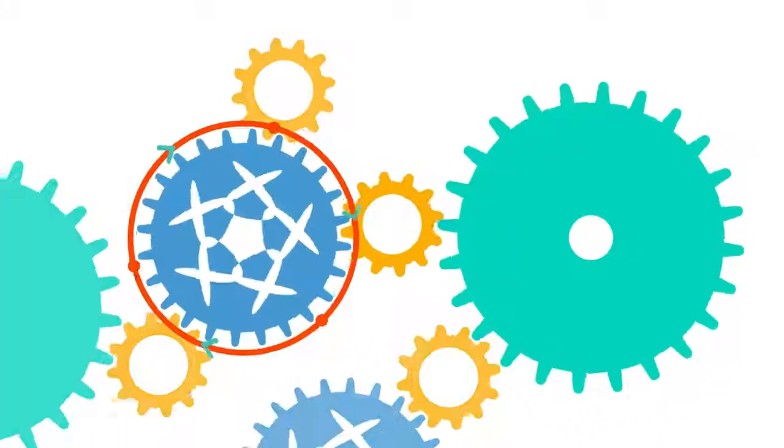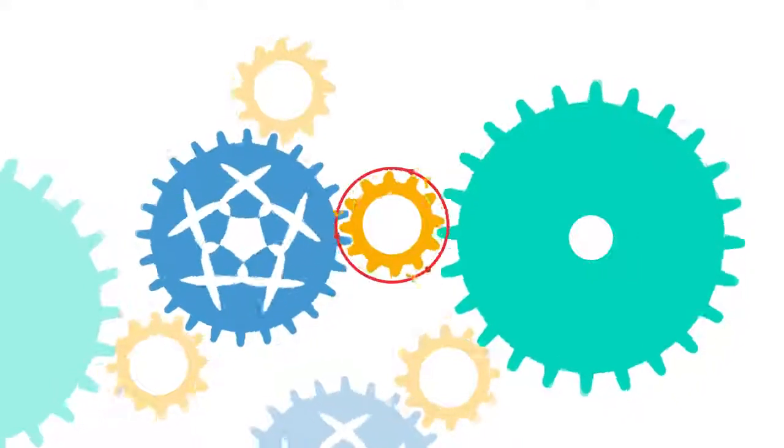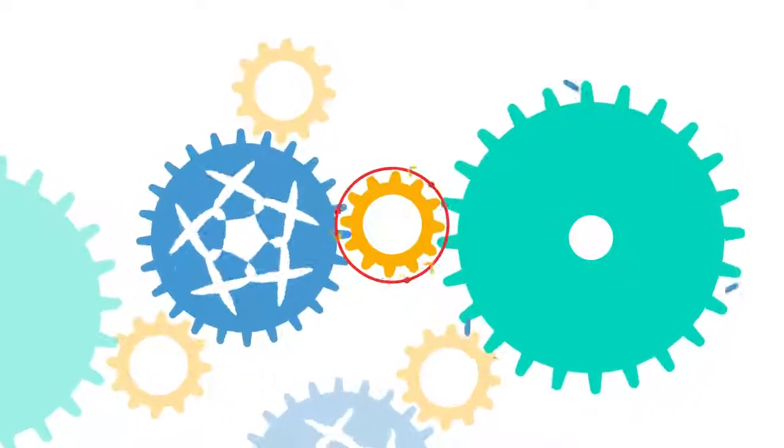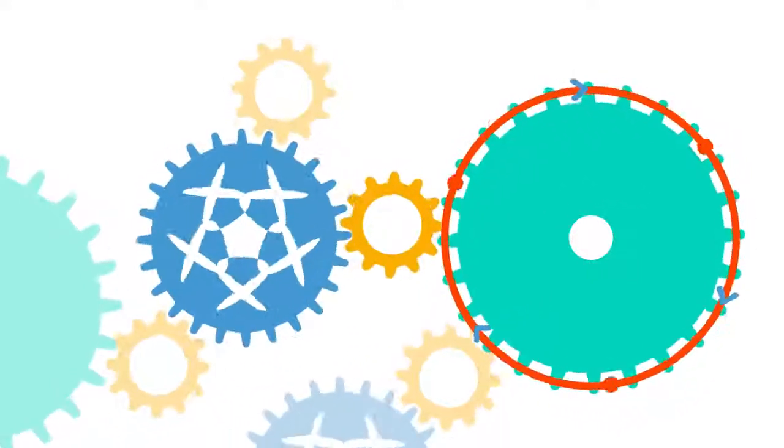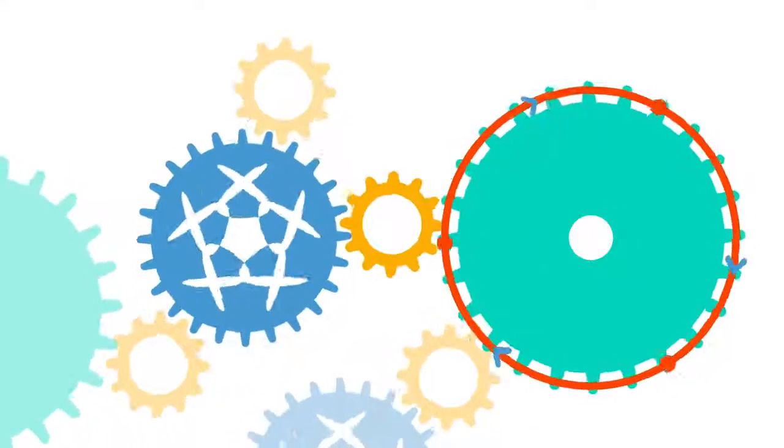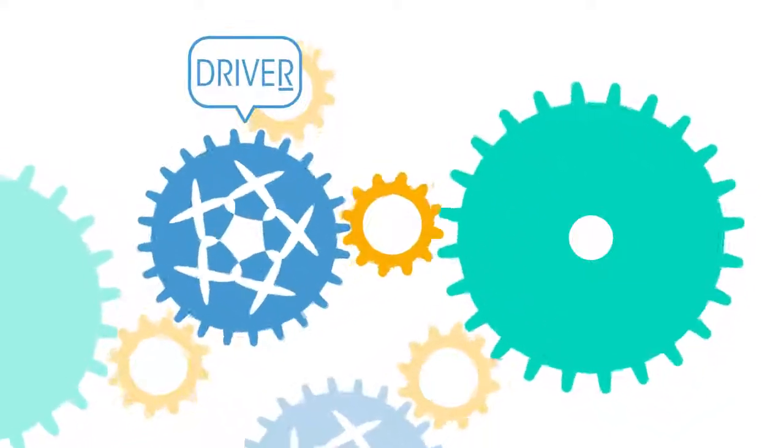If the first gear turns clockwise, then the second anti-clockwise and the third clockwise again. The original gear is called the driver and the other gears are said to be driven.